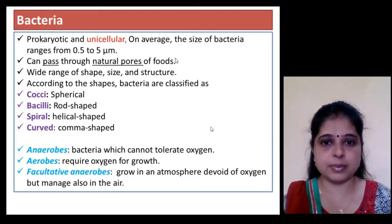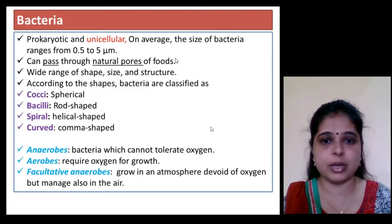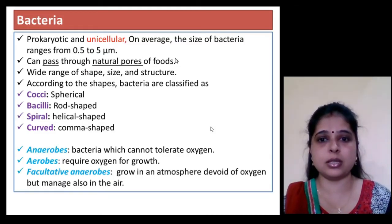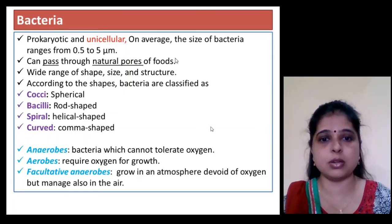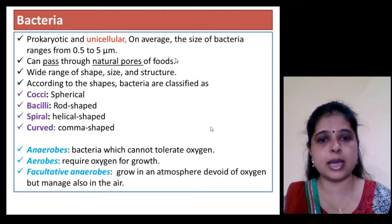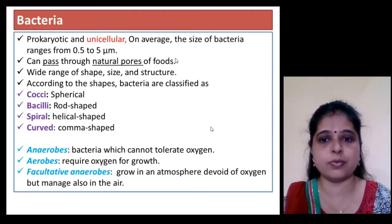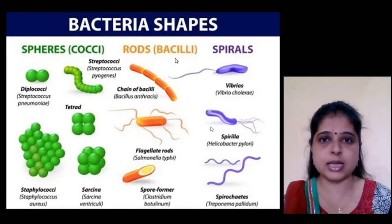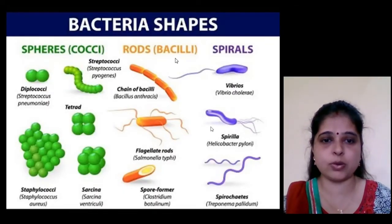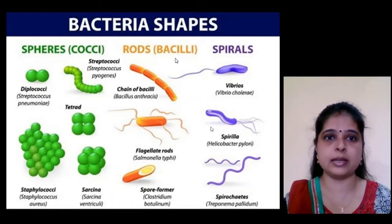If growth occurs in the absence of oxygen, the bacteria is anaerobic in nature. But if the bacteria grows in an atmosphere devoid of oxygen but can also manage in the presence of air, such bacteria are called facultative anaerobes. There is a large diversity in the shapes of bacteria.